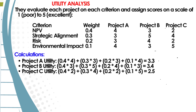Calculating overall utility: you multiply each option's rating on each criterion by the corresponding criterion weight, then sum the products to obtain the overall utility score. For Project A: 0.4 times 4, plus 0.3 times 3, plus 0.2 times 3, plus 0.1 times 4, which gives us 3.3. So the Project A utility is 3.3.